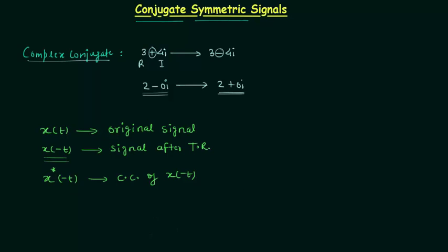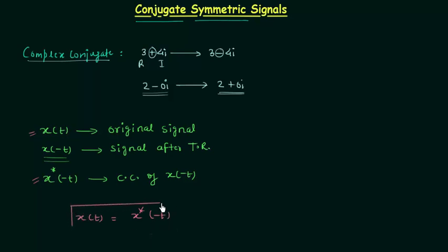In the case of conjugate symmetric signals, the original signal x(t) is the same as the complex conjugate of x(-t). That is, x(t) equals x*(-t). This is the condition for conjugate symmetric signals.